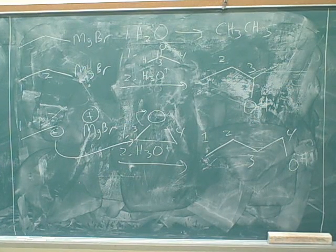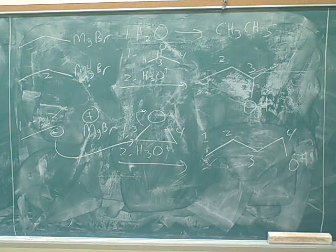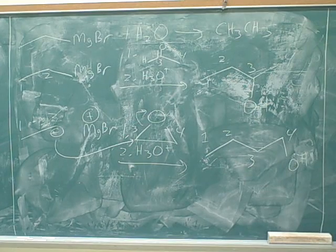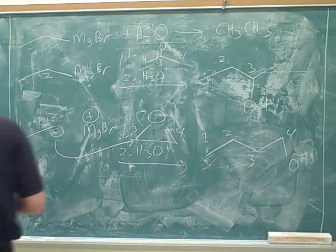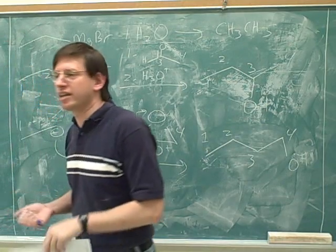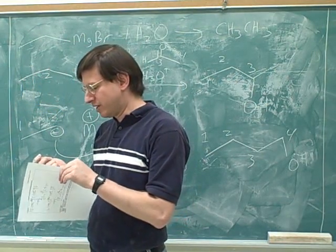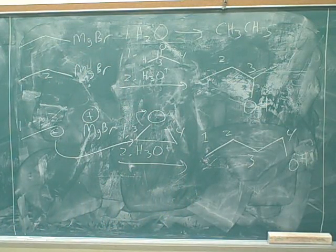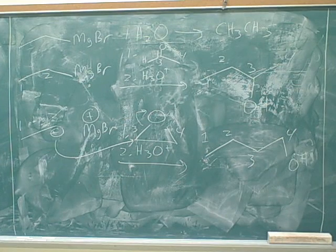I want you to look at Lectures 19 and 20. Some of the stuff on this handout we haven't gone over yet. But here's an overview of the things that you can do with R⁻. Where do you get R⁻ from? Grignards. R⁻ means a carbon with a negative charge. So this is what you can basically do with that.